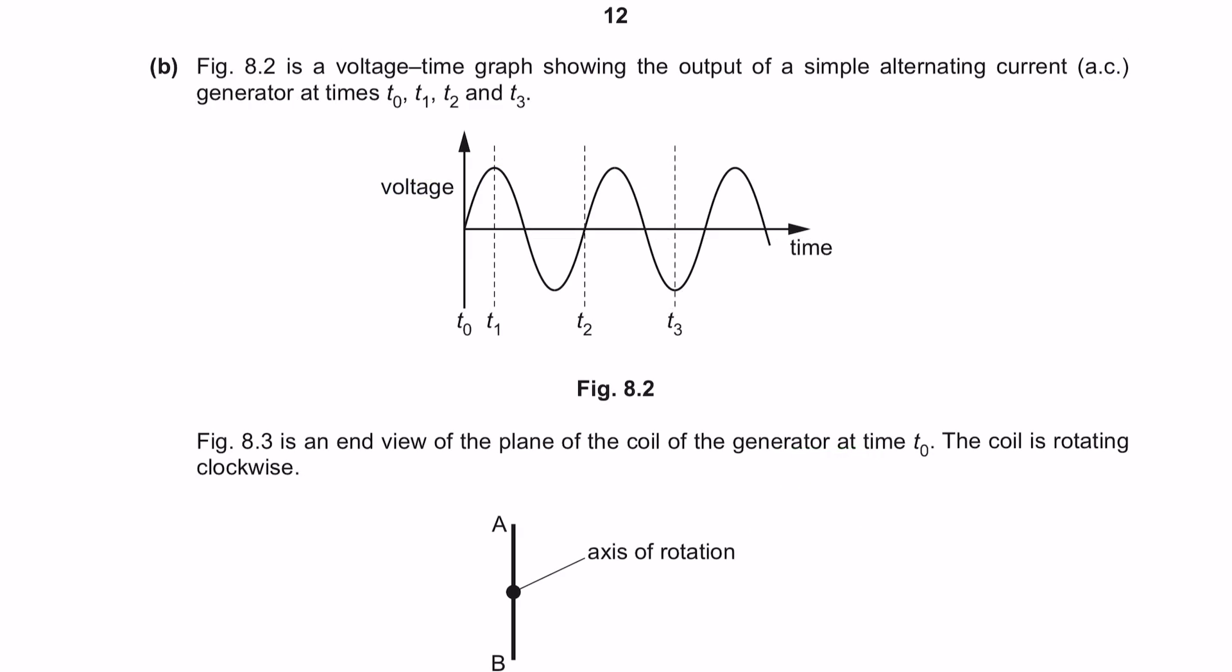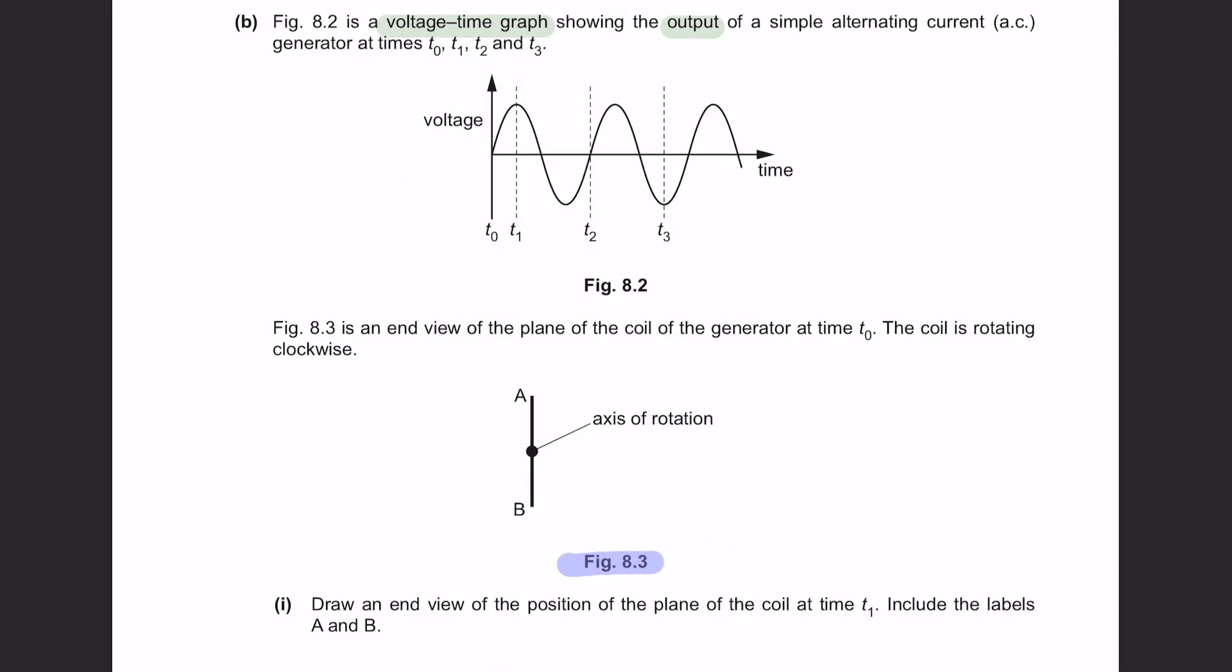Question B. Figure 8.2 is a voltage time graph showing the output of a simple AC generator at time T0, T1, T2, and T3. Figure 8.3 is an end view of the plane of the coil of the generator at time T0. The coil is rotating clockwise. Let me first explain what this represents. Axis of rotation means it's in the center, and terminal A is over here, and terminal B is over here, like this.